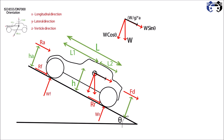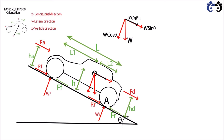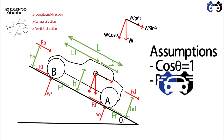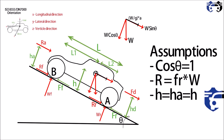The height where the drag or pulling force is acting is hd. The traction force is Ff on the front tire and Fr on the rear tire. The front and rear contact patches are shown by B and A respectively. Assumptions: cos(theta) ≈ 1 (theta is very small), R equals fr times W as total rolling resistance, and h equals ha equals hd — all heights are equal.